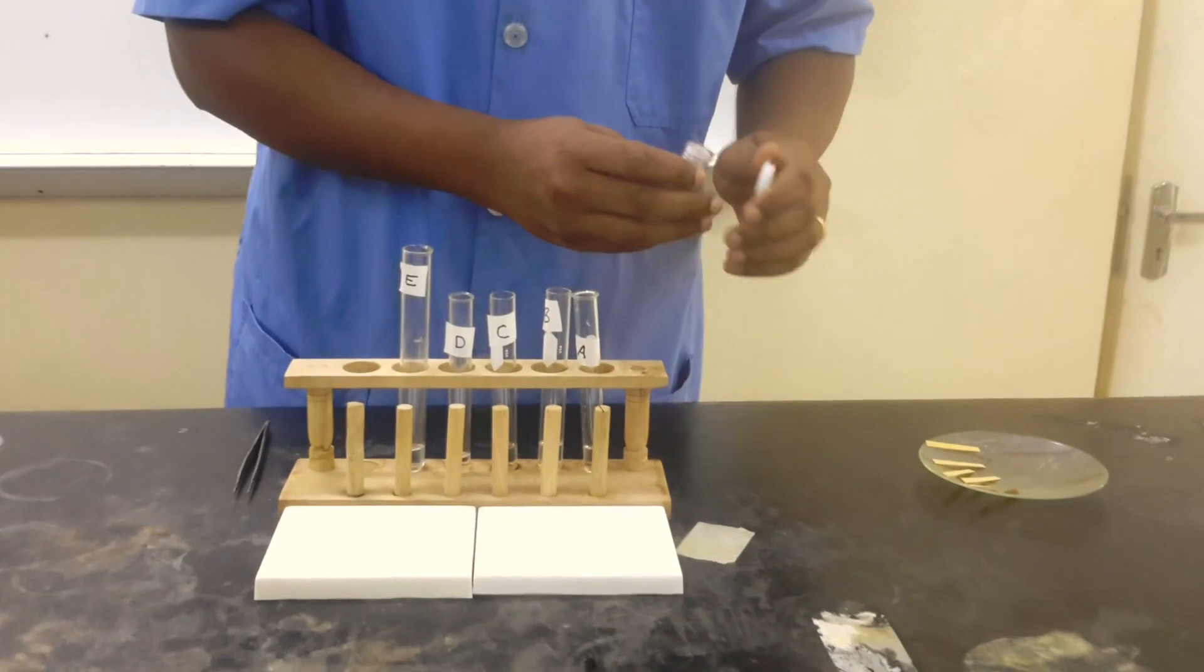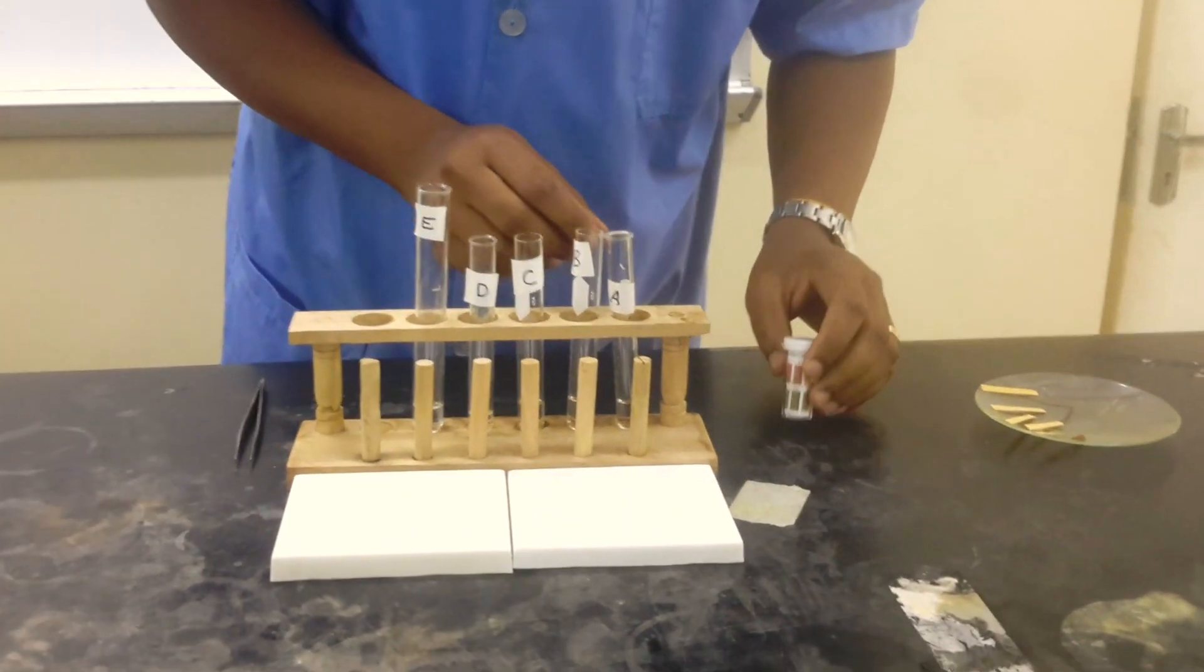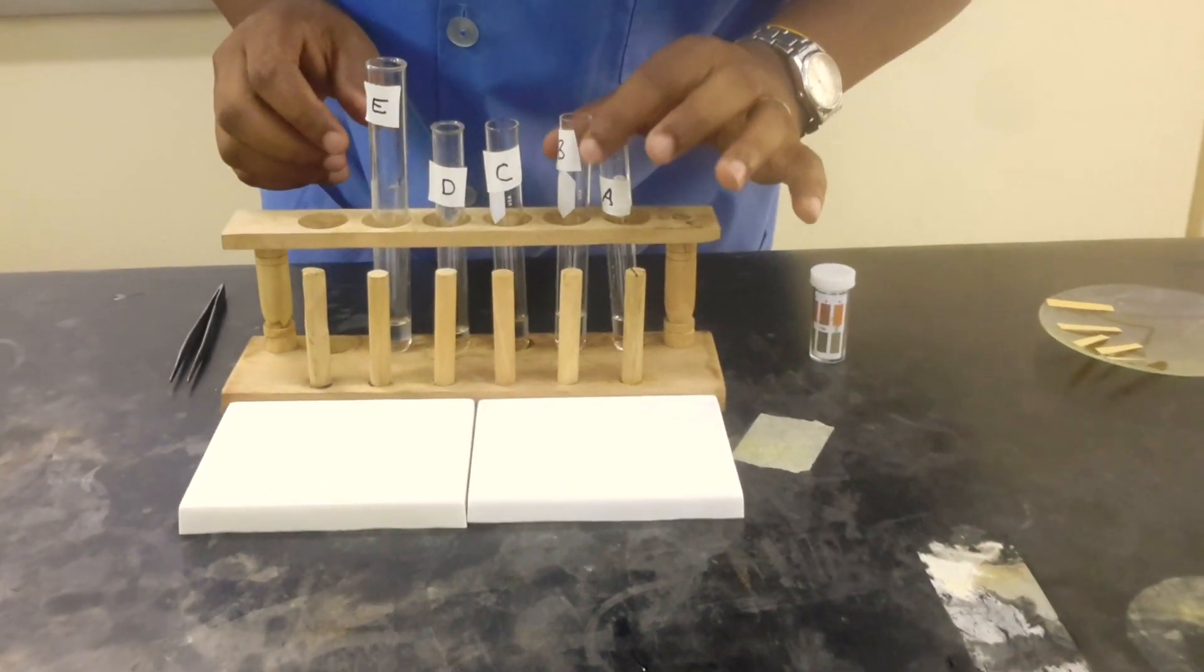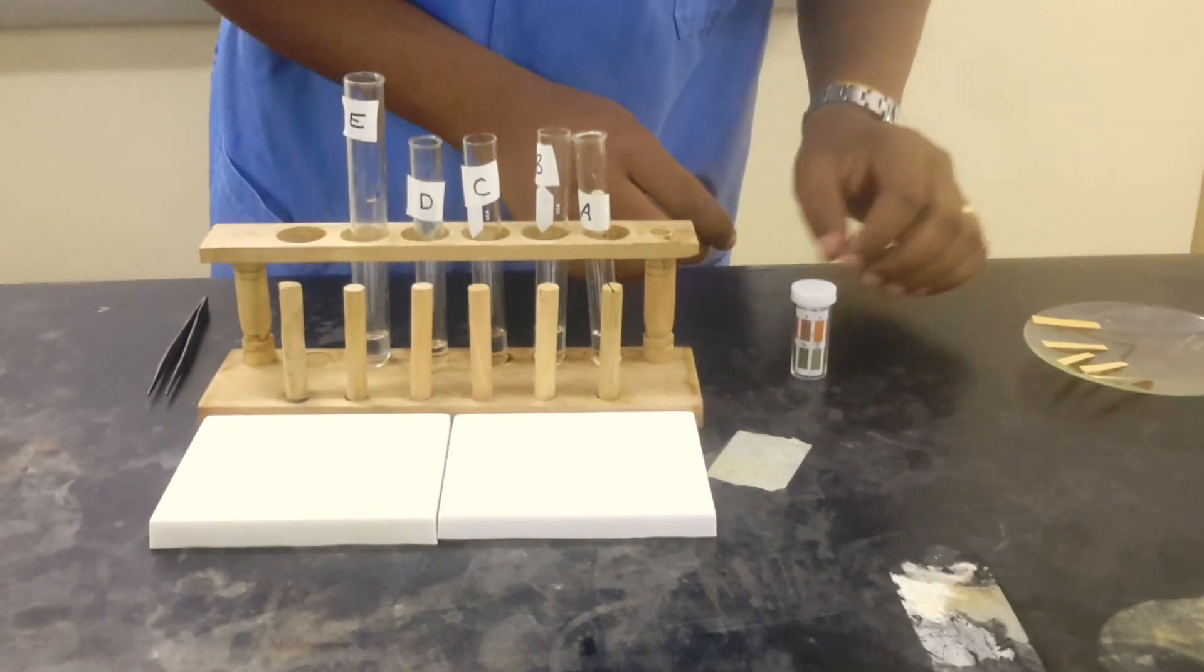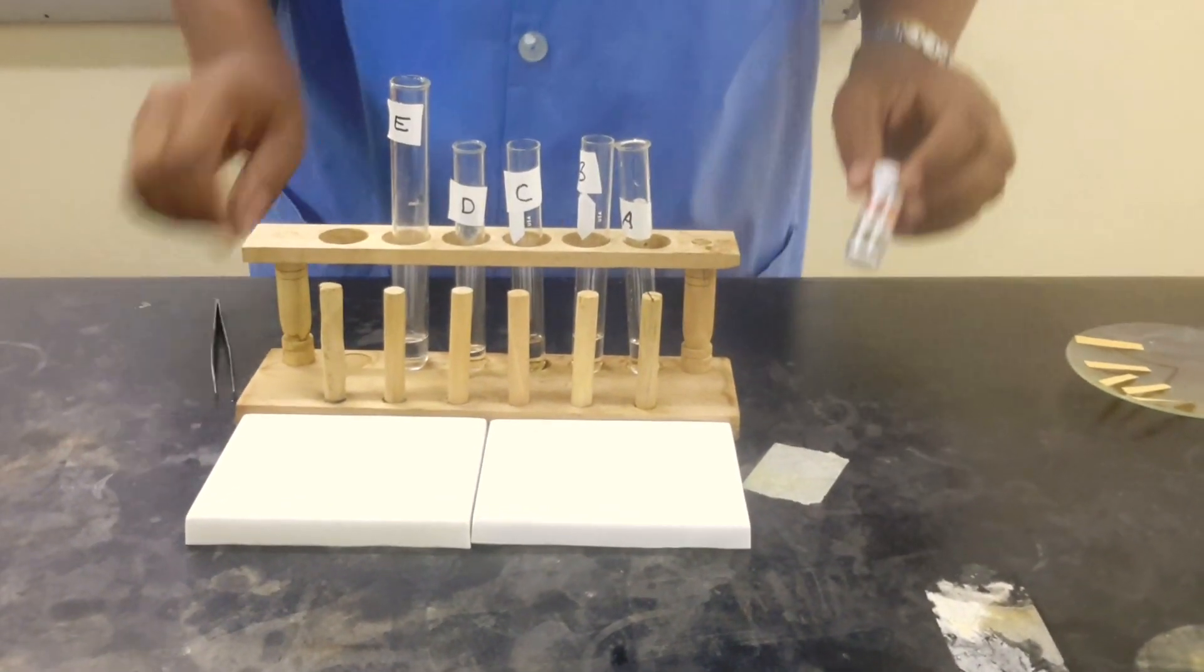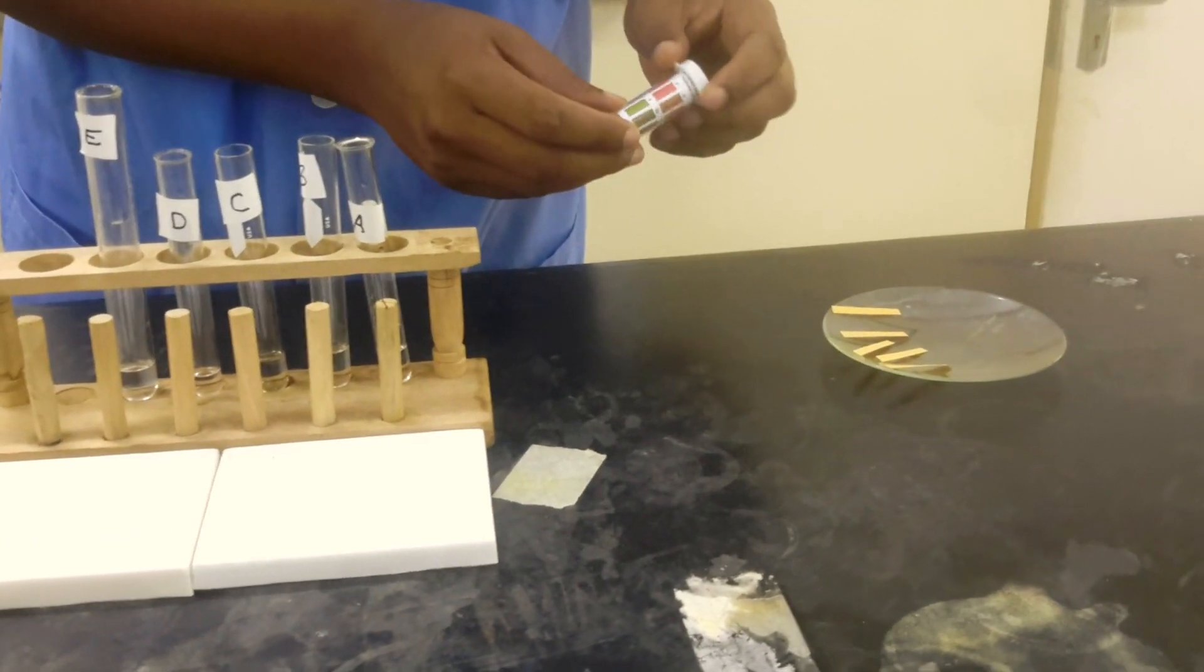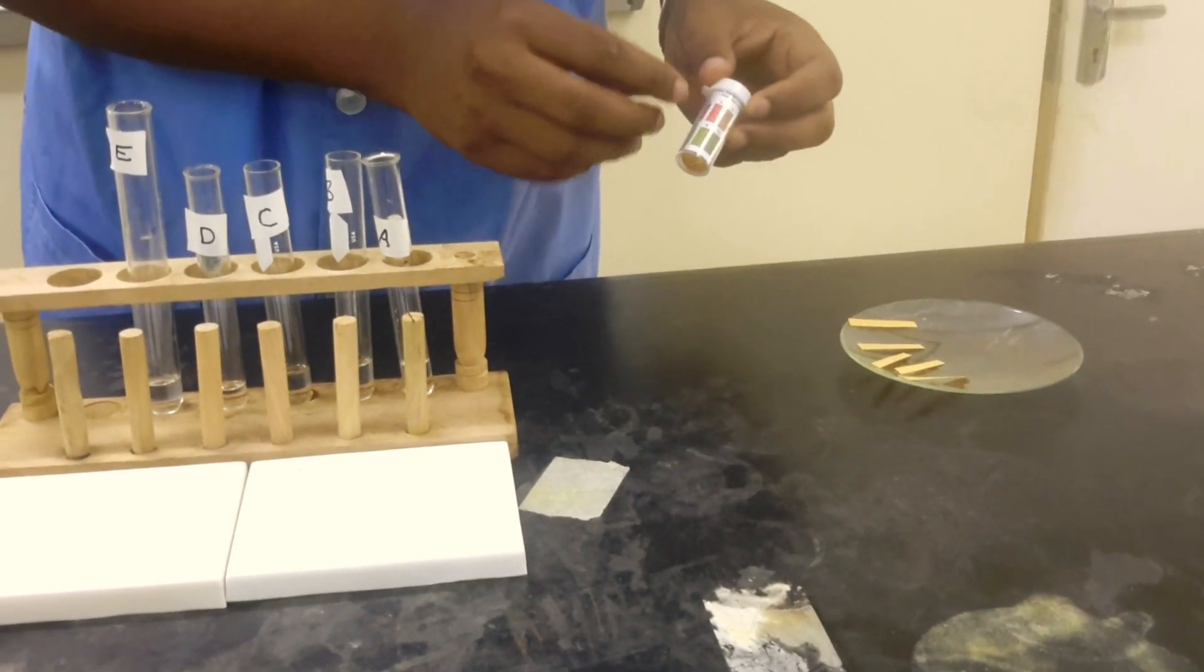We're going to be using universal indicator, so we're going to take a little bit of each solution A, B, C, D, E, and we're going to drop it on a strip of the universal indicator paper. Then we're going to match the characteristic color change that's given and determine its pH.